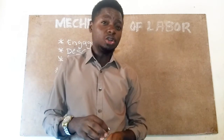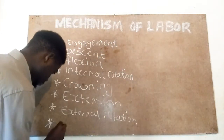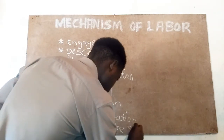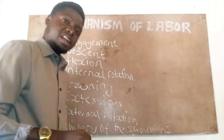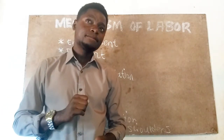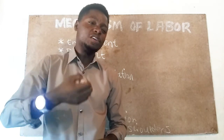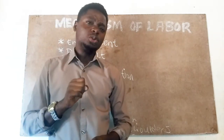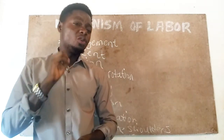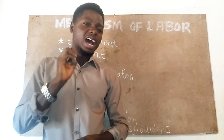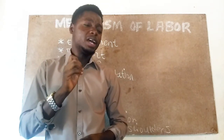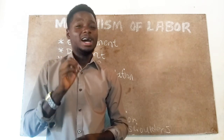Finally, delivery of the shoulders and the baby takes place. The midwife applies downward traction in order to deliver the anterior shoulder, until the rest of the baby is delivered. Knowledge of the normal mechanism of labor is important for midwives in order to avoid complications that may occur as the baby is being born.